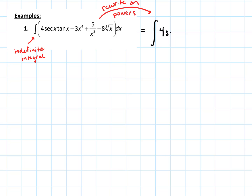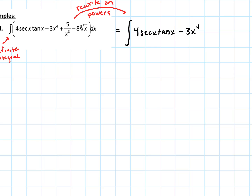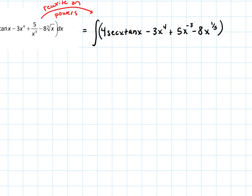So doing a rewrite, I get the integral of 4 secant x tangent x minus 3x to the fourth. The 5 over x cubed becomes 5x to the negative third using rules of exponents, and then 8 times x to the one-fifth dx. That differential tells me I'm integrating with respect to x, which is what the function is in terms of, so I'll apply all my antiderivative rules.